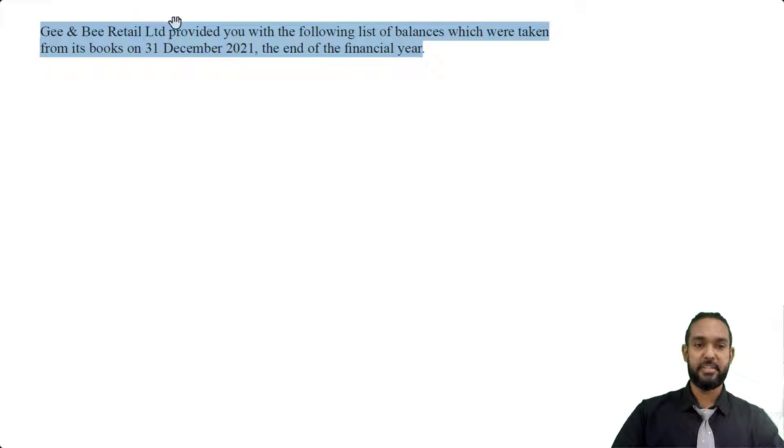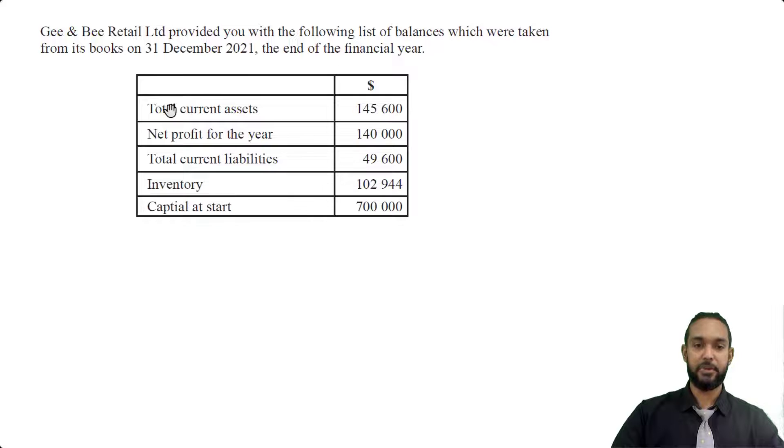So it says that G&B Retail Limited provided you with the following list of balances which were taken from its books on 31st December 2021, the end of the financial year. So we have total current assets, net profit for the year, total current liabilities, inventory, capital at start. Now what do they want us to do?